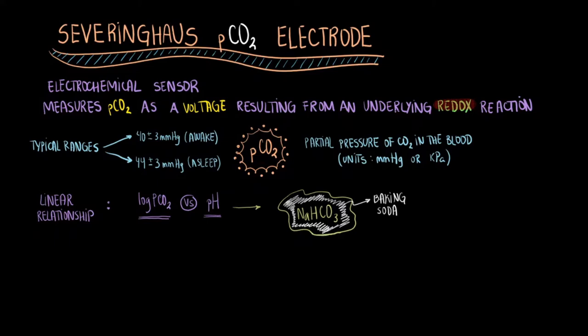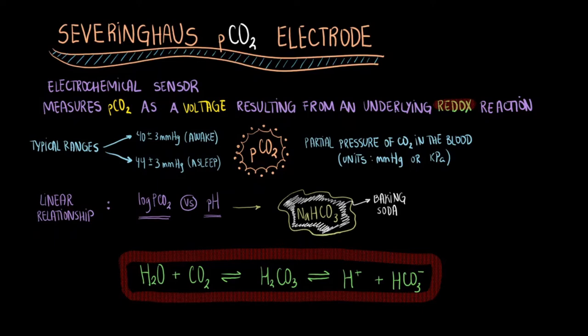Now, back to the redox reaction mentioned earlier. You can see it here in green. This is the reaction responsible for making the electrode work. Notice how the sodium bicarbonate molecule is similar to the carbonic acid and bicarbonate ion. This is not purely coincidental. The saturated baking soda solution helps maintain constant levels of bicarbonate ions in one of the Severinghaus chambers.